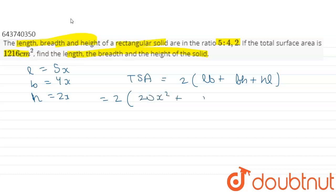plus 8x square plus 10x square, which equals 2 into 38x square.